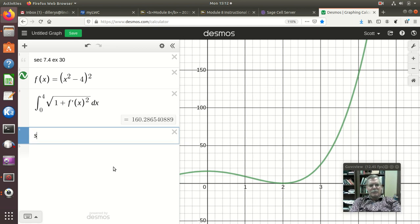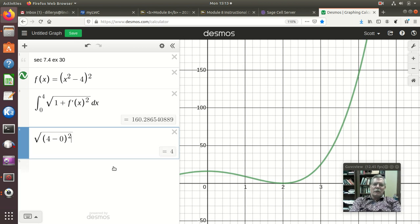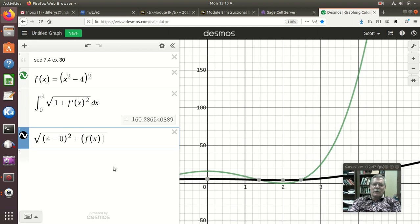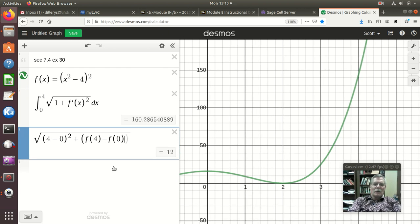So I need the square root and I need the difference in the x's. So that's 4 and 0 squared. And then the sum added to that of the difference in the y's. So that would be f of 4. Jumping the gun a little bit. So we get minus, oh, f of 4 minus f of 0 squared.